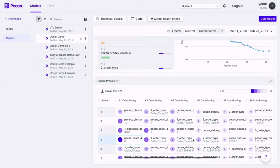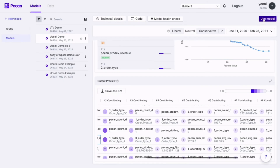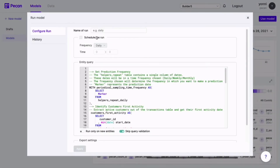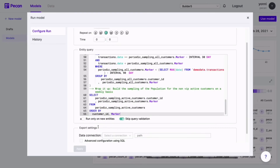A huge differentiator with PECAN is that once you have a model, you can export the results very quickly back to the relevant business system. For example, you can set a weekly or daily prediction job, and the values or scores will be sent to your marketing automation platform — so you can close the loop quickly and even conduct experiments, without the help of a data scientist or a machine learning engineer. You can schedule when and how you want the predictions to be sent by choosing the frequency, the destination, and so on.